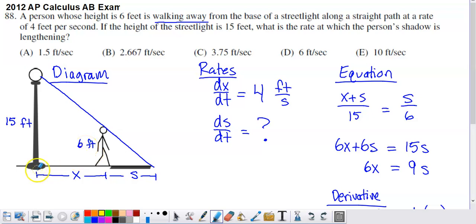They are walking away from the lamppost. If the height of the street light is 15 feet, so I've also got that labeled, what is the rate at which the person's shadow is lengthening?